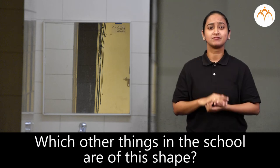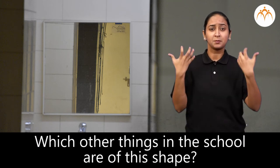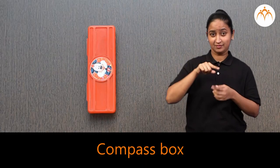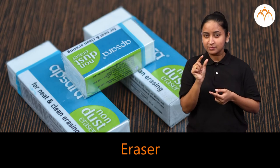Which other things in this school are of this shape? Compass, eraser, book, notebook.